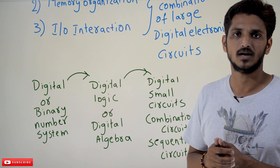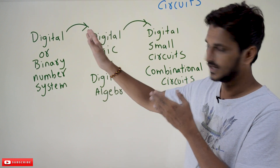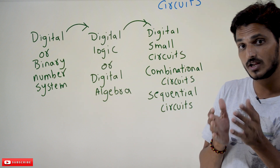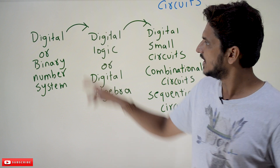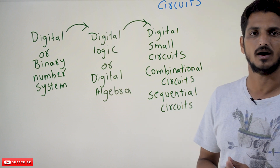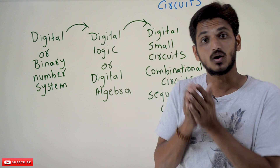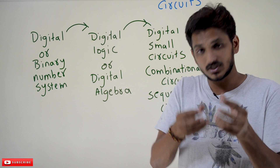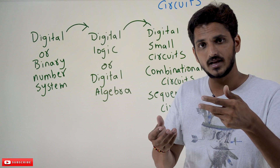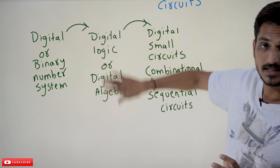So digital or binary number system is the first concept you have to deal with. The first session is going to cover digital or binary number system. Once you have an understanding of binary number system, the second section is going to deal with digital logic, or digital algebra. If you want to design large circuits, you first need some basic logic — what is digital logic, what is binary logic? Those basic logics required to design large circuits will be discussed in the second session.